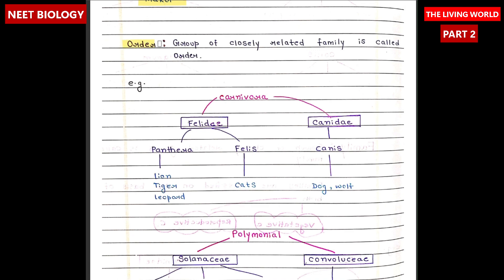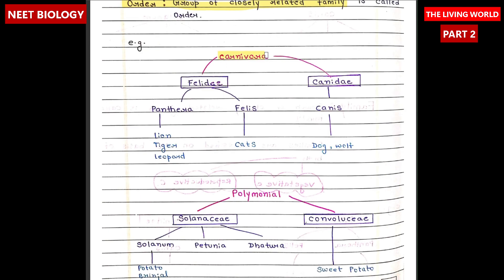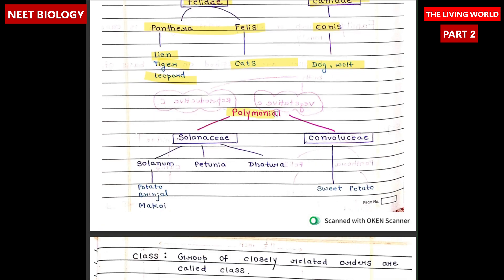Order is a group of closely related families. For example, Carnivora is an order; Felidae is a family; Panthera and Felis are genera; and lion, tiger, leopard, and cats are species. Canidae is a family; Canis is a genus; and dog and wolf are species. Polemoniales is an order; Solanaceae and Convolvulaceae are the families; Solanum, Petunia, and Datura are genera; and potato, brinjal, tomato, and sweet potato are species.